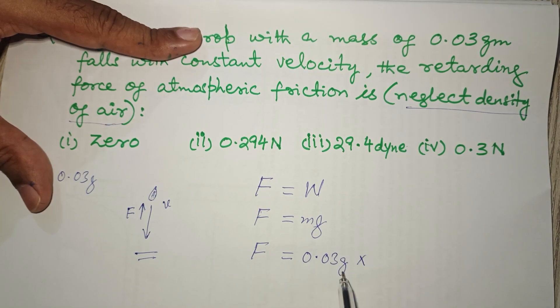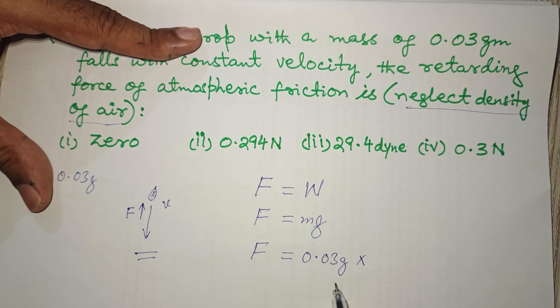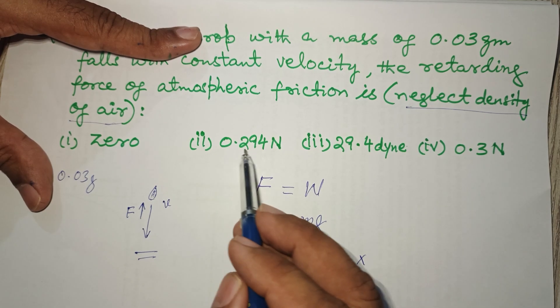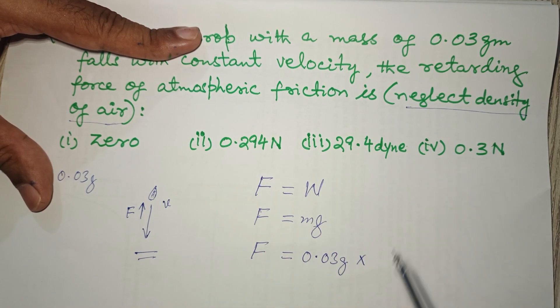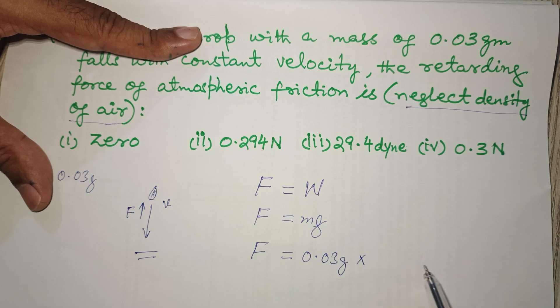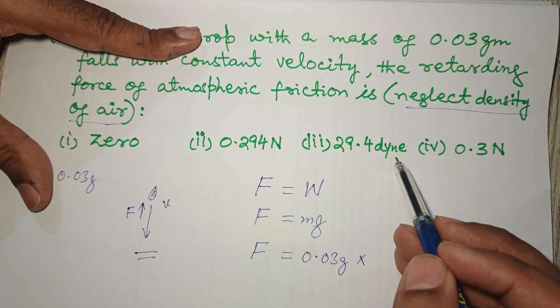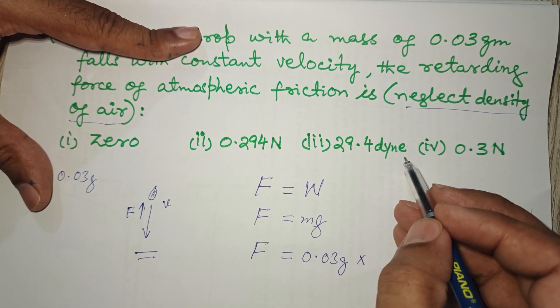When we reach over here, if we convert it into kilograms we have to divide it by 1000. When we divide it by 1000, we won't get either this result or this result by multiplying it with 9.8 or 10. So the answer will come out in dynes.